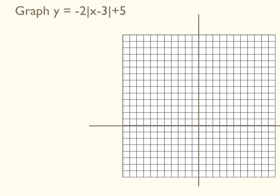Here's an example. We're going to graph y equals negative 2 times the absolute value of x minus 3, plus 5. Thinking about the transformations: to the x values, we're adding 3, so we shift right 3. The y values change three ways — the negative reflects it over the x-axis, the 2 stretches it by a factor of 2, and the plus 5 shifts it all up 5.